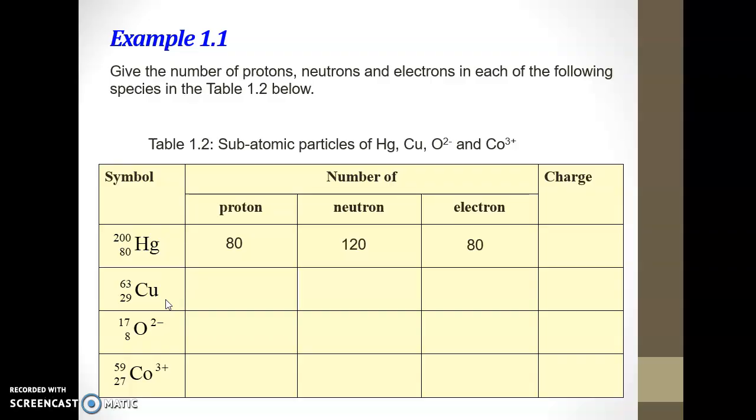All right. So next, let's look at copper. The proton number is 29. The neutron number is 34. And the electron number is 29. Next, let's look at oxygen. This is an anion. So the proton number is 8. The neutron number is 17 minus 8, which is 9. And then the electron. Anion has extra electrons, right? How many electron extras are in this species? 2. So, the number of electron is 8 plus 2.